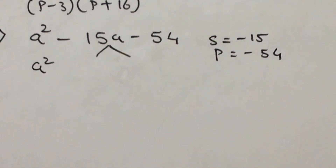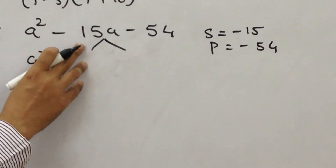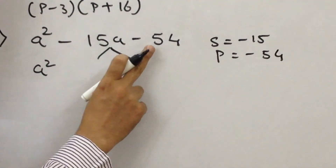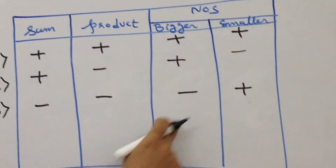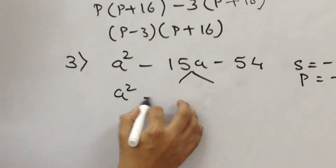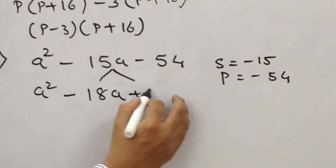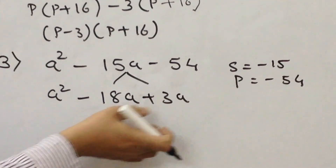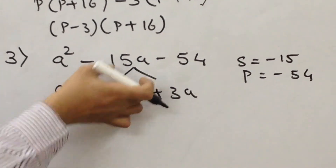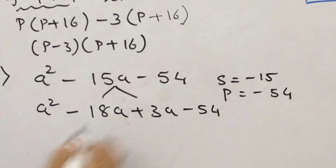The first term, a squared, is as it is. The sum is minus and the product is minus. So one number is big minus and the other is plus. 18 threes are 54, so we write minus 18a plus 3a. Verification: minus 18 plus 3 is minus 15, and minus 18 into plus 3 is minus 54.